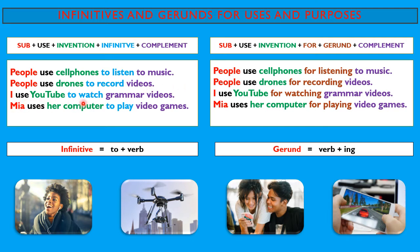I use YouTube to watch grammar videos. Mia uses her computer to play video games. Here we need to conjugate the verb 'use' based on the subject. People is plural, so: they use. I use. Now Mia is third person — Mia is she — that's why we say Mia uses. Mia uses her computer to play video games. The infinitives are: to listen, to record, to watch, and to play.